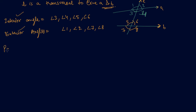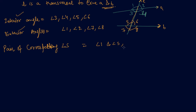Now let's come to the pair of corresponding angles. What are corresponding angles? They are angles which are on the same side of a transversal and on two different lines. Same side of the transversal — if one angle is on the left-hand side, then the other angle should also be on the left-hand side; if on the right-hand side, then the other should also be on the right-hand side. So the corresponding pairs are: angle 1 and angle 5, angle 2 and angle 6, angle 3 and angle 7, and angle 4 and angle 8.